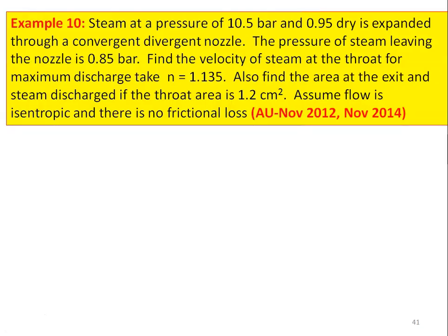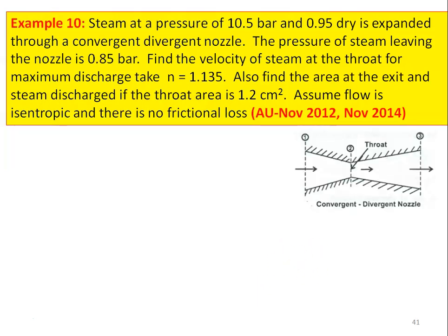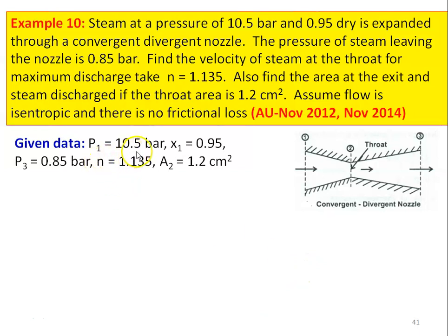Example number 10 from November 2012 and November 2014 question paper. Steam at a pressure of 10.5 bar and 0.9 dry is expanded through a convergent-divergent nozzle. The exit pressure is 0.85 bar. Find the velocity of steam at the throat for maximum discharge. Take N = 1.135. Also find the exit area and steam discharged if the throat area = 1.2 cm². Assume isentropic flow with no frictional loss.